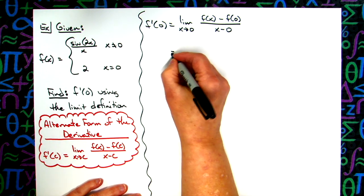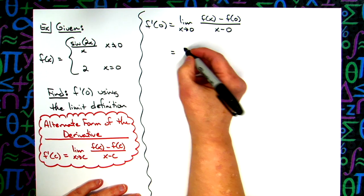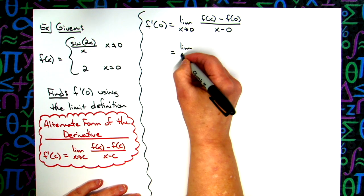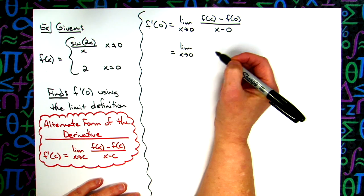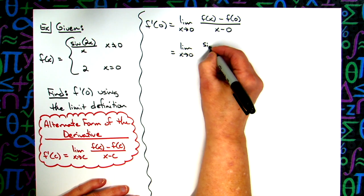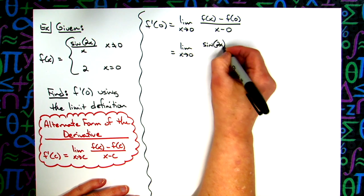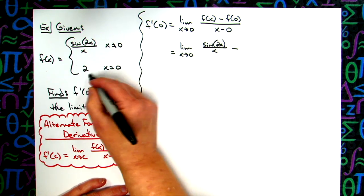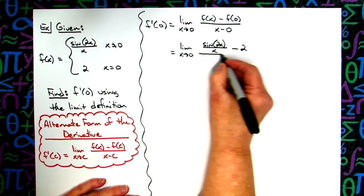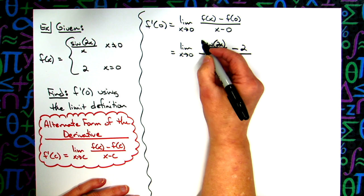Now what I'm going to do is I'll plug in my things that I know, so I'll have the limit as x approaches 0. I'll plug in my function, which is sine of 2x all over x. f of 0 we know is 2, and then on the bottom there I'm just going to have an x.